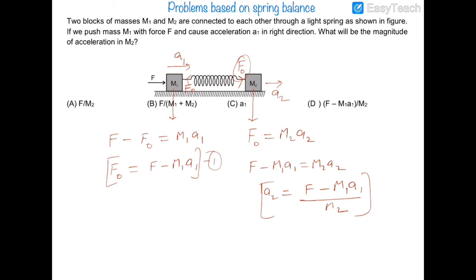If the spring were in a relaxed state, there would be no acceleration of block m2 and the answer would be zero — which is not among the options — confirming the spring must be in a compressed state when force F is applied to m1.